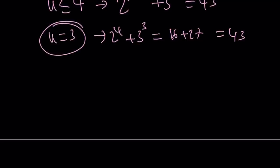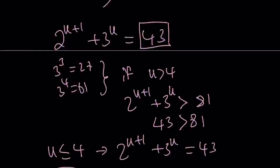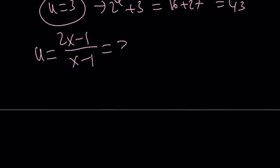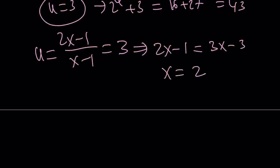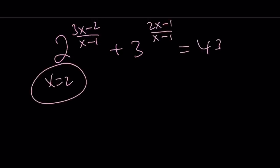So u equals 3. But recall that u is 2x minus 1 over x minus 1 from our substitution. Setting that equal to 3 and cross-multiplying: 2x minus 1 equals 3 times x minus 1, which gives 2x minus 1 equals 3x minus 3. Putting the x terms on the same side gives x equals 2. So x equals 2 is the solution. To recap, the original problem was 2 to the power of 3x minus 2 over x minus 1, plus 3 to the power of 2x minus 1 over x minus 1, equals 43, and x equals 2 satisfies this equation. You can always verify by substitution.